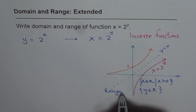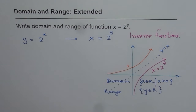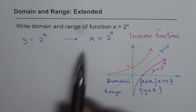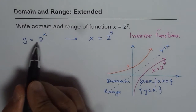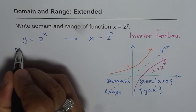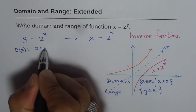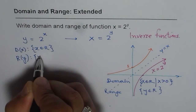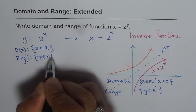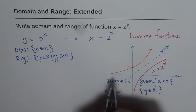So we have the domain and range of our function x equals 2 to the power of y. From the knowledge of inverse functions, you could also find it this way: y equals 2 to the power of x, the original function, has a domain which is all real numbers — x belongs to real numbers. The range of this function is y belongs to real numbers but y is greater than 0, since the x-axis is a horizontal asymptote.